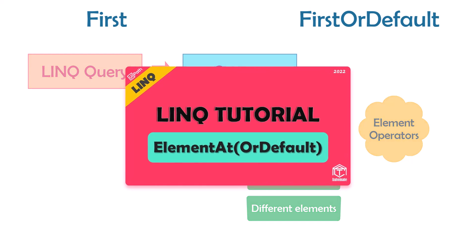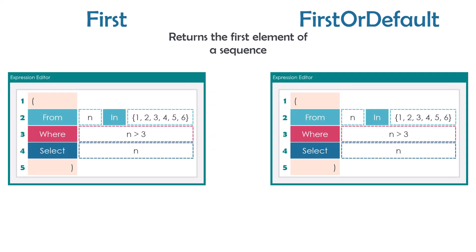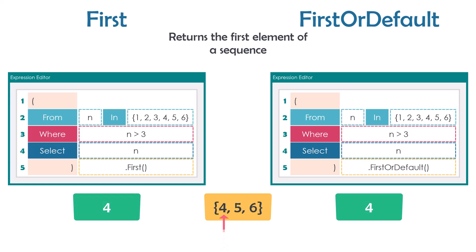As the name suggests, both operators return the first element from a sequence. If I have a sequence containing one or more elements and I want to get the first element from it, I can use either operator. For example, with a query to get numbers greater than three, the output is a collection of three numbers. Using either First or FirstOrDefault with empty brackets returns the first number in the sequence. Until this point there is no difference between both operators - they can be used the same way and return the same result. This is the first way to use these operators.